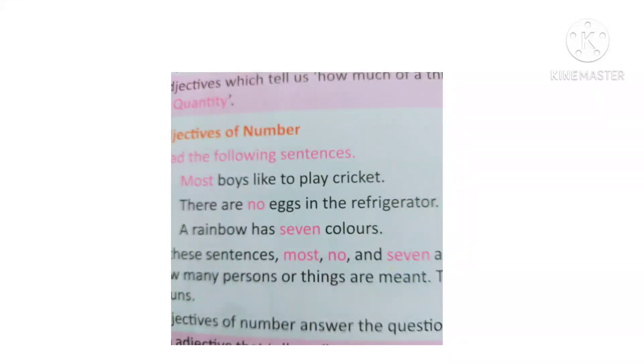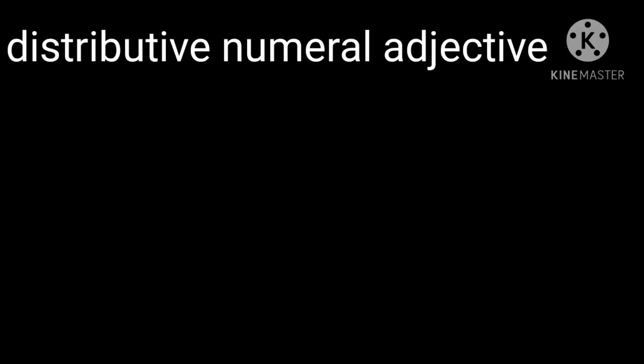A rainbow has seven colors. Ask the question how many? Answer is seven. So the words no and seven are adjectives of number. Now we study distributive numeral adjectives.